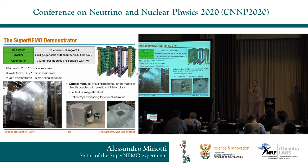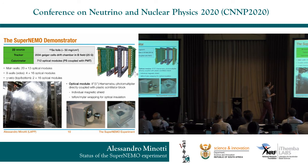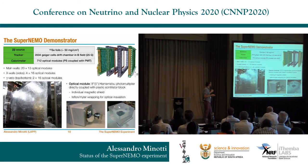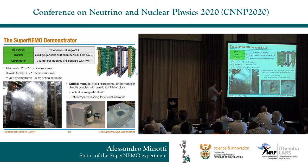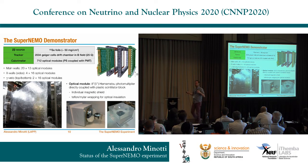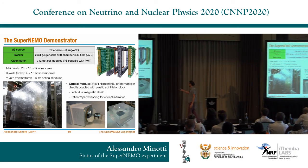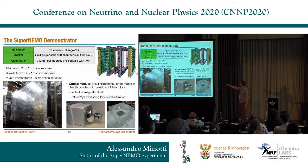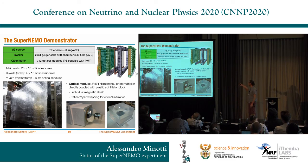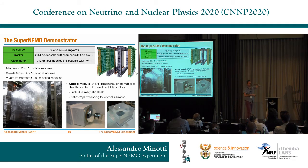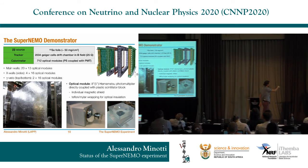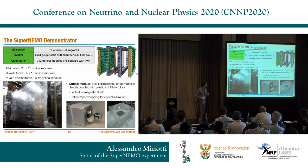The tracker is sandwiched between two calorimetric walls. Each wall consists of optical modules — a cube of plastic scintillator coupled with a photomultiplier. Each optical module has magnetic shielding for the PMT and is wrapped in Teflon and Mylar to isolate it optically, making every optical module an independent detector. One main wall has 20 columns of 13 optical modules each. There are also X-walls that sandwich the detector on the two short sides, and gamma veto walls on the bottom and top, consisting of 4×16 and 2×20 optical modules respectively.